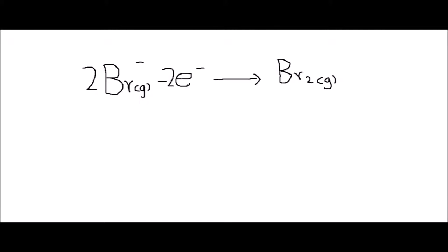This also has to be balanced, meaning you add 2Br-, 2e-, and Br2 has 2 anyway, so you don't need to do anything to that.